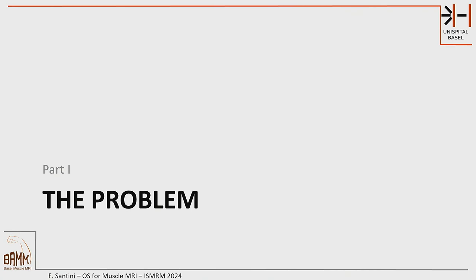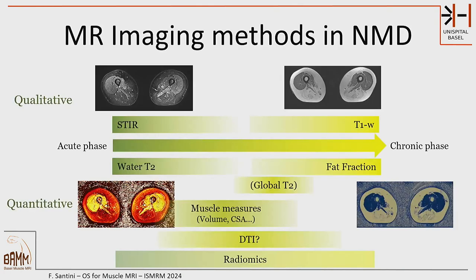We're not too many — can I see if any of you is already a developer or programmer? So I assume that the others are mostly users of tools, and I hope there is some content for both of you. Just to recap, in neuromuscular disorders we've traditionally relied on qualitative images, mostly STIR and T1-weighted imaging, and these are also contrasts used in everyday muscle diagnosis. But the community has moved towards more quantitative approaches — usually fat fraction, water T2, and global T2 fitting. Also important are muscle measures like volume, surface area, and DTI is emerging, as well as radiomics — it's a very big field.